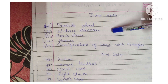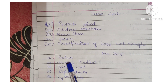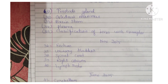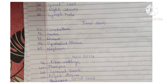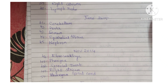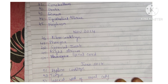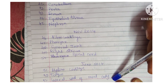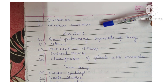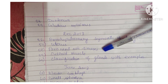Further anatomy topics: prostate gland, gluteus maximus, brain stem, pleura, classification of bones with examples, rectum, urinary bladder, spinal cord, right atrium, lymph node, cerebellum, aorta, femur, epithelial tissue, nephron, fibrocartilage, pharynx, synovial joint, right atrium, spinal cord, hyaline cartilage, tongue, lateral wall of nasal cavity, jejunum, gluteus maximus, bronchopulmonary segments, and uterus.